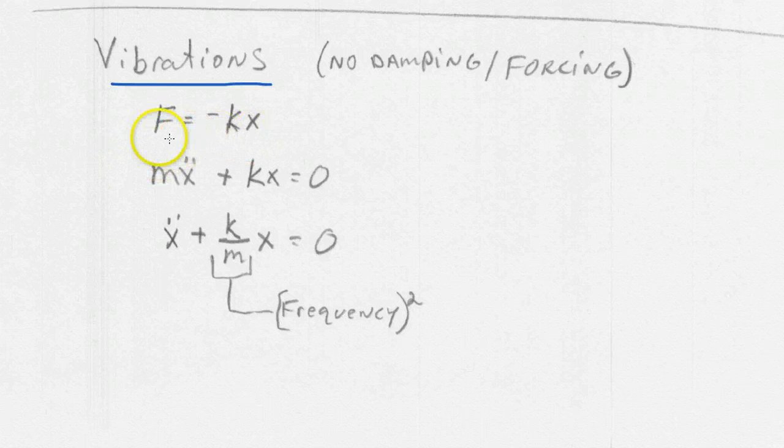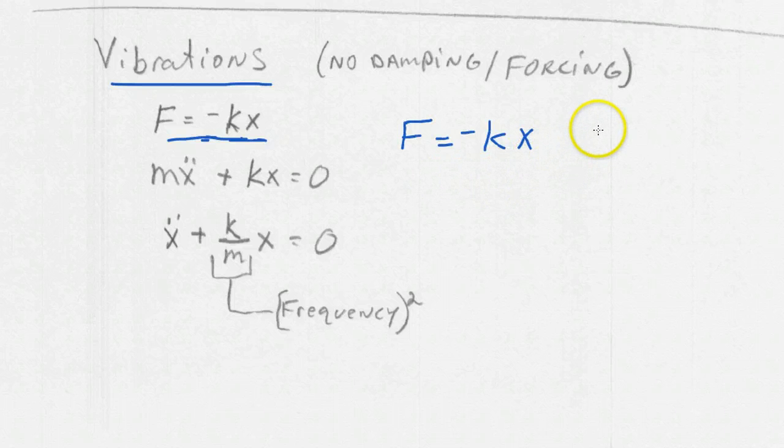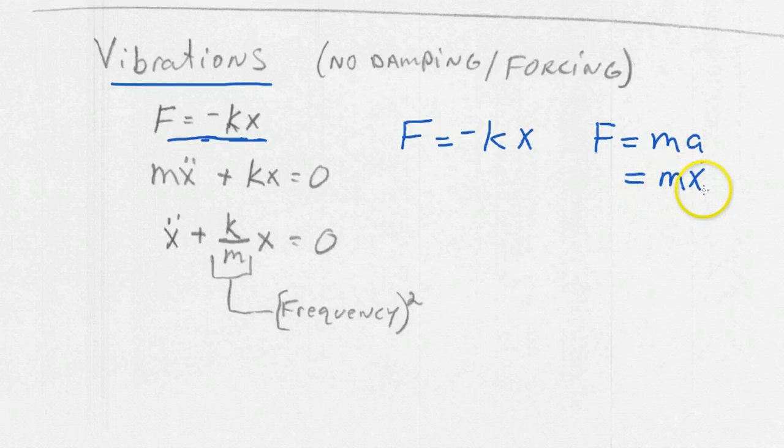The basic model of vibrations is that we have a restoring force once a structure is disturbed, and that restoring force is characterized by a spring constant k, and the magnitude of the force is proportional to the displacement. We know that the sum of all forces on an object has to equal the mass times the acceleration, and so we write it as this differential equation: mx'' + kx = 0.